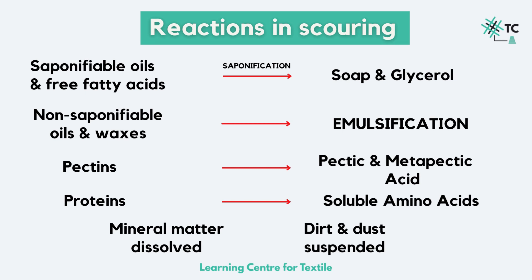The reactions that take place during scouring are as follows: saponifiable oils and free fatty acids undergo saponification and get converted into soap and glycerol. Non-saponifiable oils and waxes undergo emulsification and can then be easily removed. Proteins are converted into soluble amino acids, pectins into pectic and metapectic acid. All mineral matters get dissolved into the mixture, and dust and dirt particles are removed by detergents. Basically, all impurities are made water-soluble so they can be washed away easily.